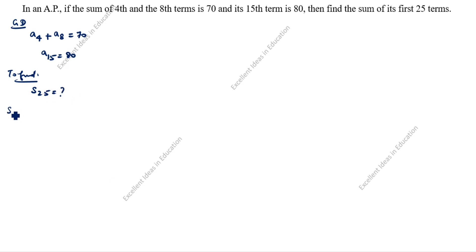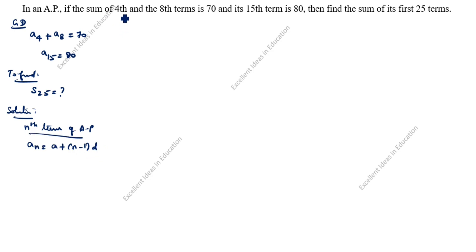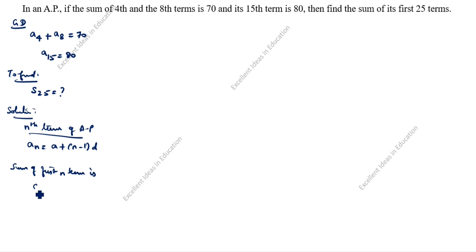Now we will solve this problem. What is the nth term of AP formula? The nth term of AP is AN equals A plus (n minus 1) into D. What is the sum of first n terms formula? Sum of first n terms is SN equals n by 2, times 2A plus (n minus 1) into D.